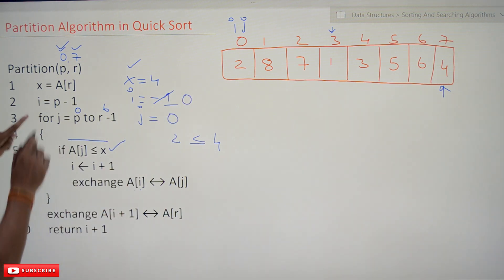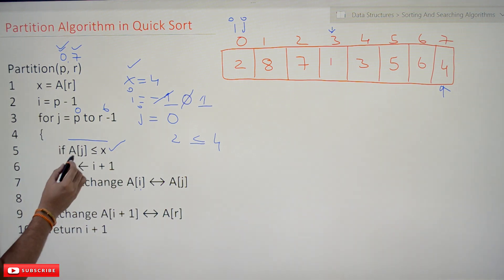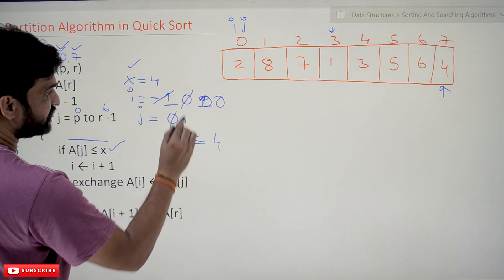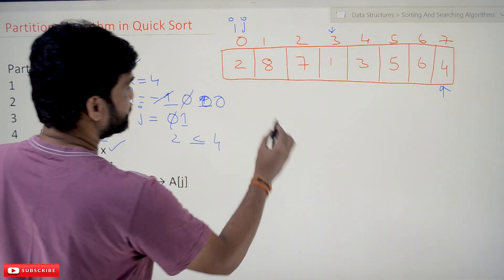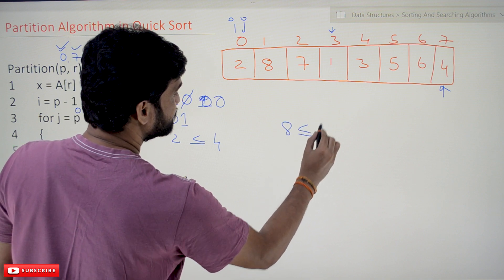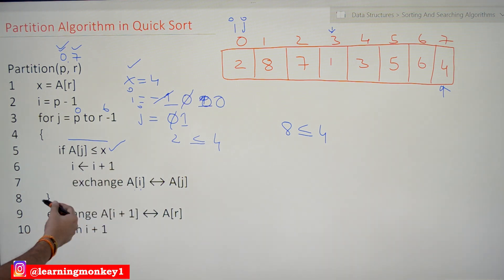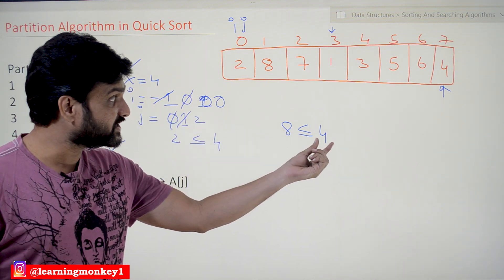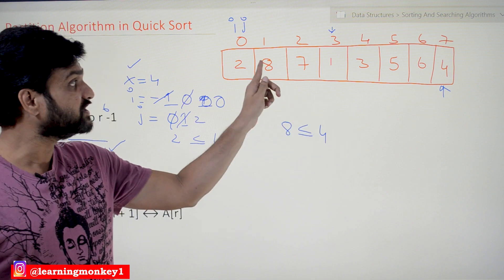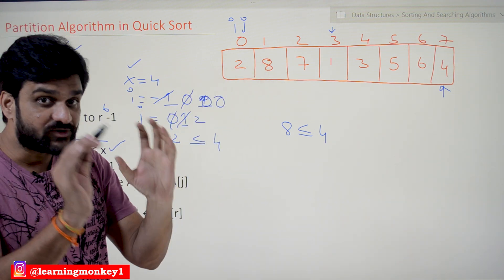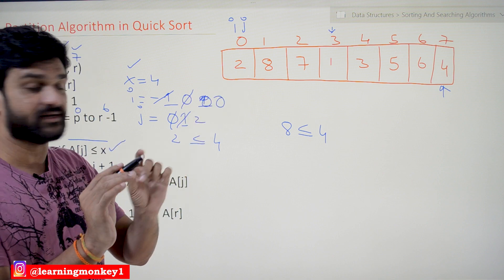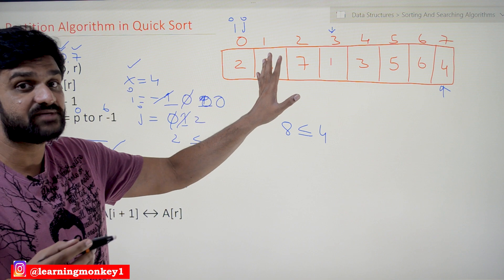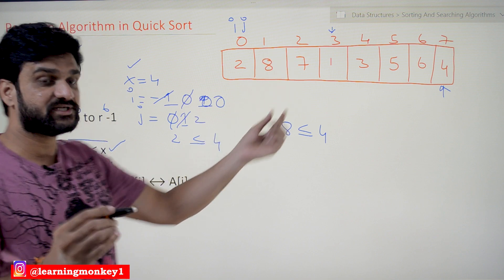In the next step, j is incremented to 1. i remains at 0. a[j] means a[1] which is 8. Is 8 less than or equal to x (4)? No, it is not true. If it is not true, no exchange happens and the loop iterates again. The key point to understand is: if any element is greater than the pivot element, there is no exchange. Here 2 is less than 4 so exchange happened; here 8 is greater than 4 so exchange has not happened.